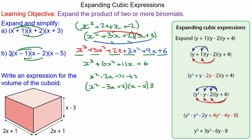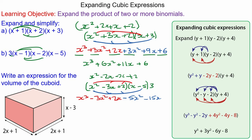So we have x squared times x giving x cubed, times the negative 3x which is minus 3x squared, times x by 2 we have 2x. Then for the negative 5 term we get minus 5x squared, minus 15x, minus 10, and we're going to multiply all of that by 3.